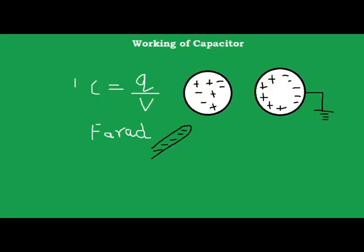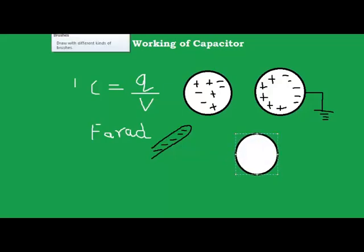If I ground these negative charges, the sphere will become fully positively charged. We have acquired charge from the neutral sphere, making it positively charged. This process is called electrostatic induction — it is a process of acquiring charges without any actual contact between two objects. There is no contact between the sphere and the plastic rod. This electrostatic induction is the principle behind the working of a capacitor.